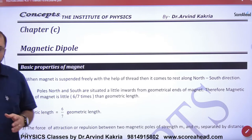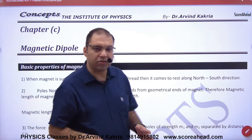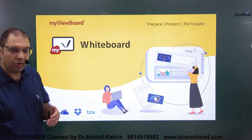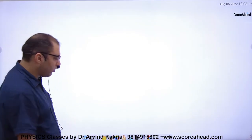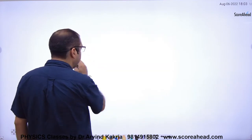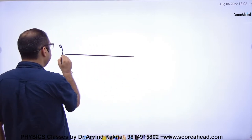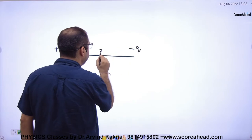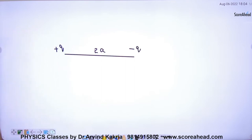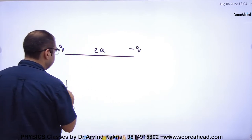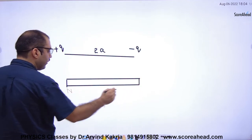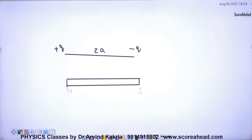The chapter of magnetic dipole is exactly the same as the electric dipole. In the electric dipole, there are two equal and opposite charges separated by a distance of 2a. Suppose you have a charge Q and minus Q separated by a distance of 2a. Similarly, if we take a bar magnet, this is north and this is south.